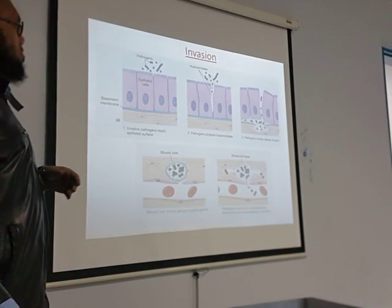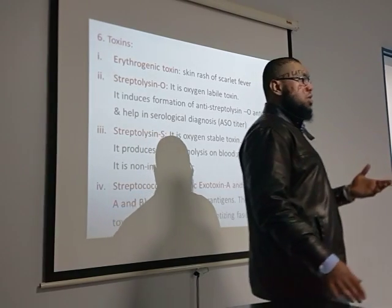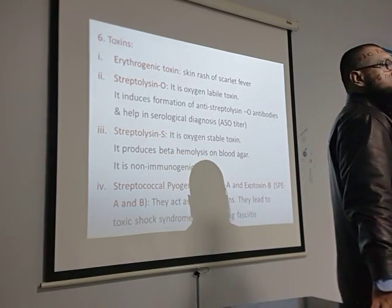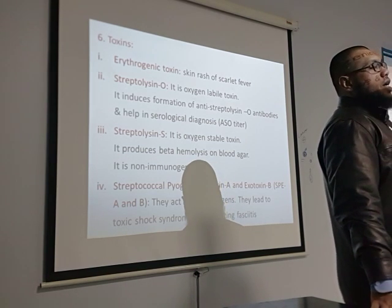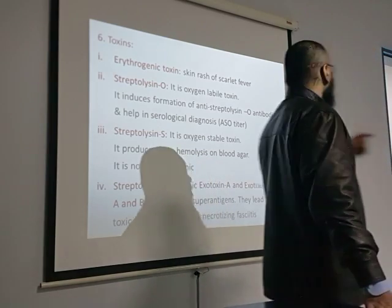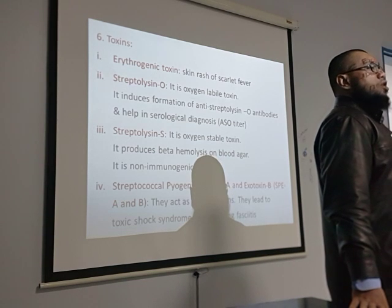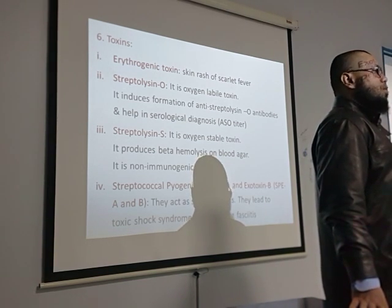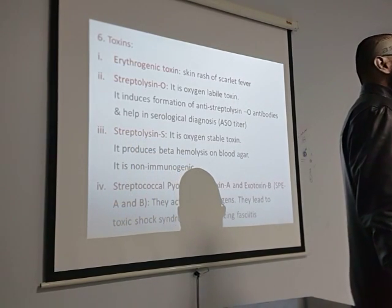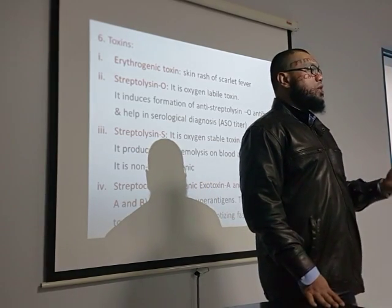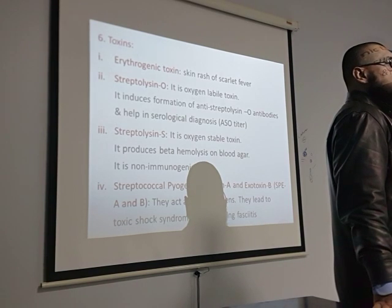Streptokinase is also known as fibrinolysin because it breaks down the fibrin clot. The bacteria also produces streptolysins. Streptolysin O — 'O' stands for oxygen-labile — is broken down in the presence of oxygen and is immunogenic. The body produces anti-streptolysin O antibodies (ASO antibodies), and the ASO test or ASO titer is used for diagnosis of this infection.